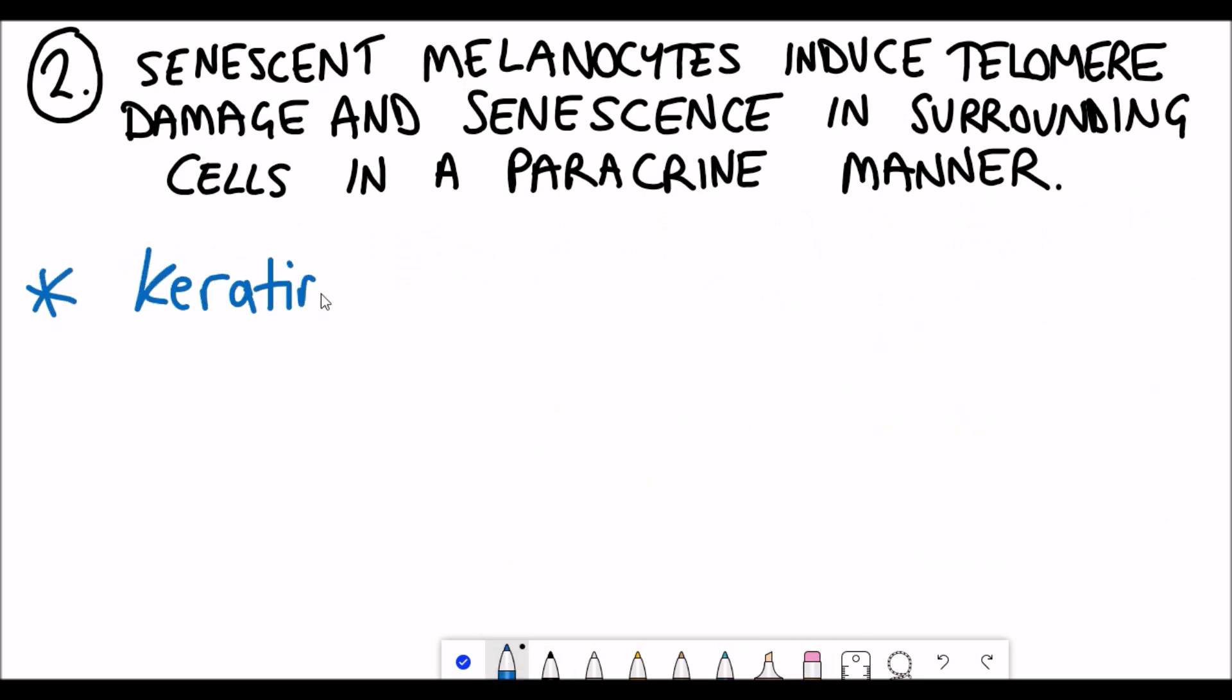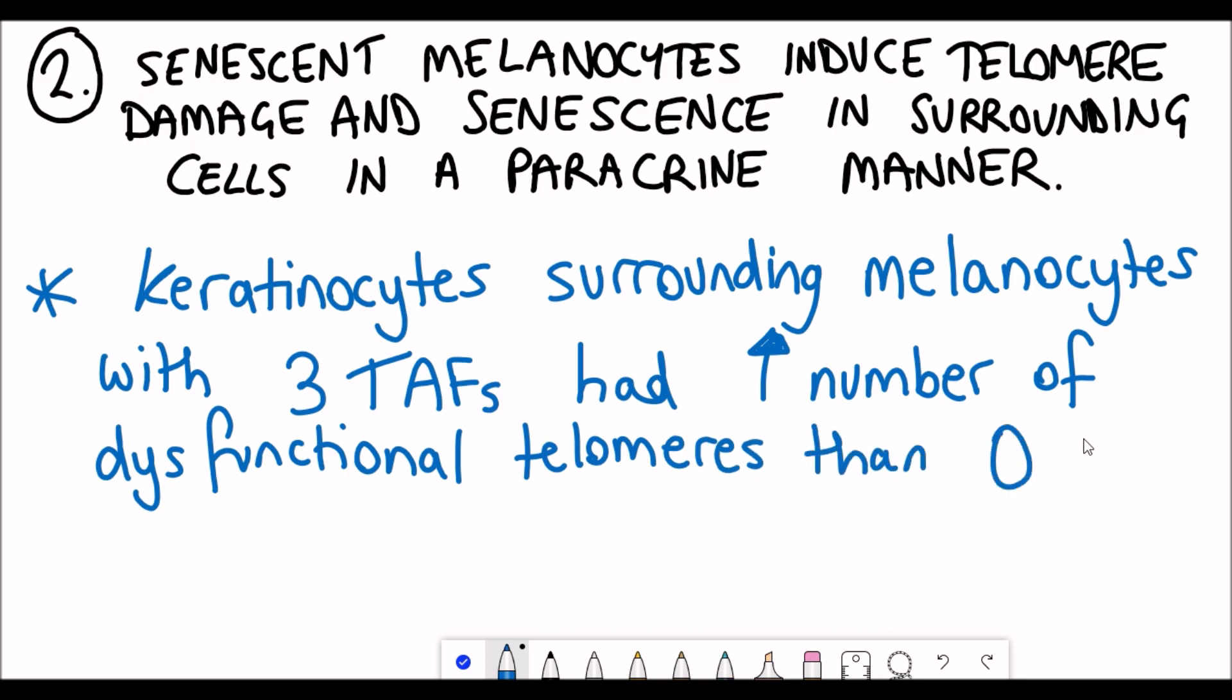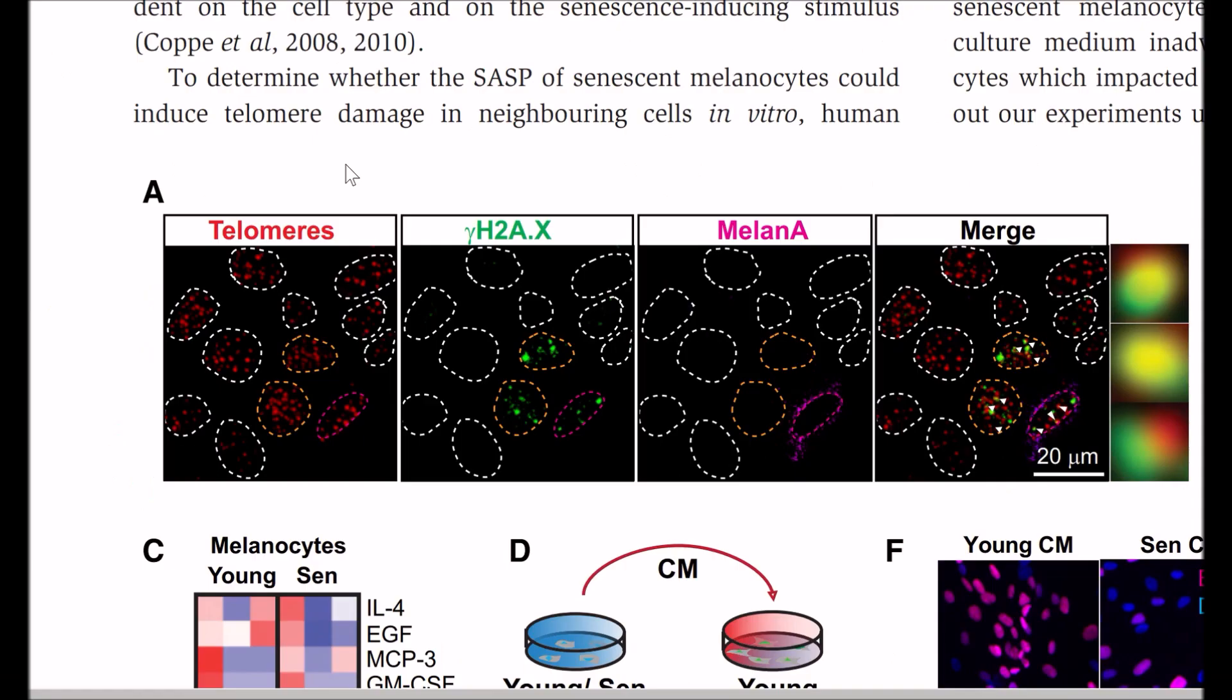The number of TAFs in these senescent melanocytes was counted and then associated with the level of dysfunction in the telomeres of the surrounding keratinocytes. They found that keratinocytes surrounding melanocytes with three TAFs had a greater number of dysfunctional telomeres than those with no TAFs. They could do this analysis by looking at different markers for the telomeres, for this DNA damage mark, and for markers that identify a melanocyte, so the TAFs are what look like the Google Chrome symbol.